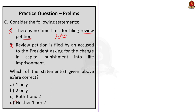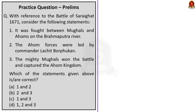Coming to the second question about the Battle of Saraighat. Statement 1: It was fought between Mughals and Ahoms on the Brahmaputra river — this is correct; it was a naval battle between the Mughal general, Kachwaha king Raja Ram Singh I, and the Ahom kingdom led by Lachit Borfuken, at Saraighat in Gauhati district of Assam. Statement 2: The Ahom forces were led by Commander Lachit Borfuken — also correct. Statement 3: The mighty Mughals won the battle and captured the Ahom kingdom — this is absolutely wrong; Mughals were defeated and Ahom retained its independence. So the correct answer is option A: one and two only.